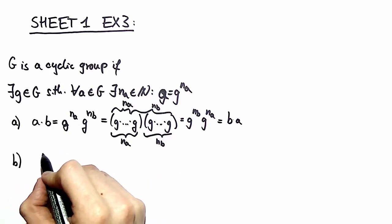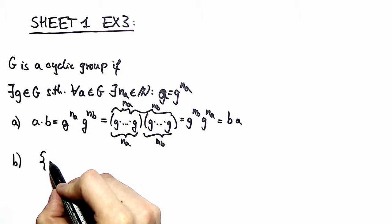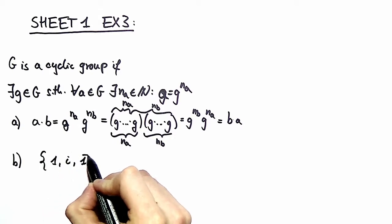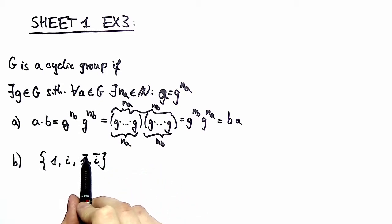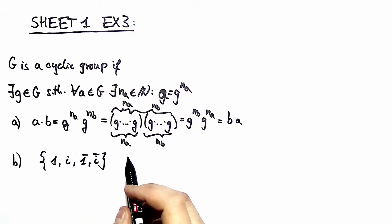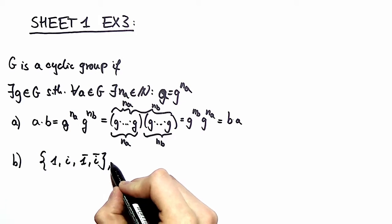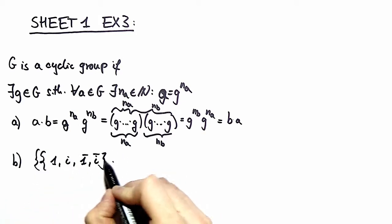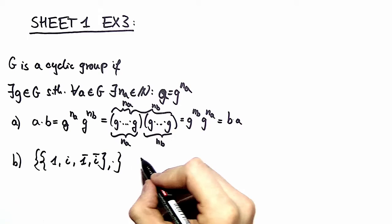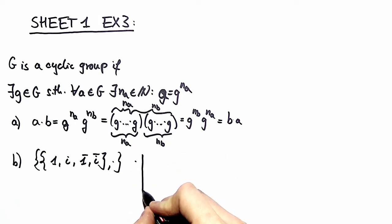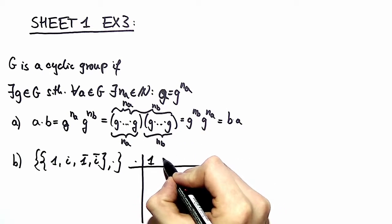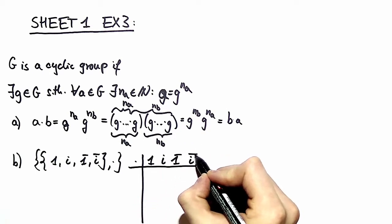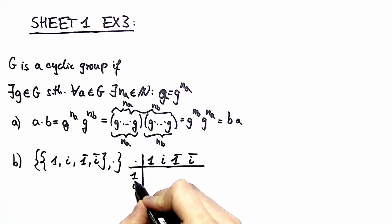In part B, we're given a set of numbers. This time it's the complex 1, i, minus 1, and minus i. I write them with bars to not confuse with a minus sign in our calculations, and we're asked to form a group out of those numbers. We take the normal multiplication. This leaves us with a group, and we can prove that by constructing the multiplication table. Of course, you all know how to handle complex numbers, so this is a rather easy task.